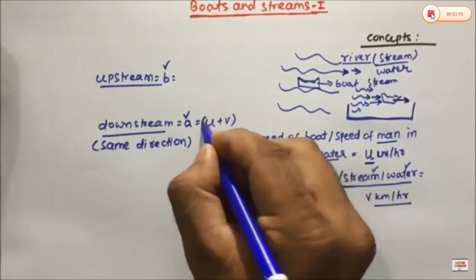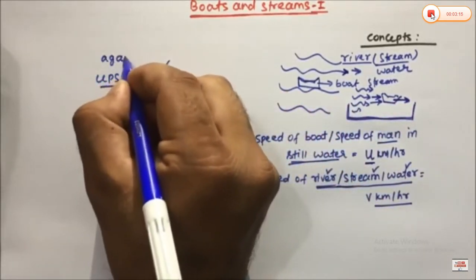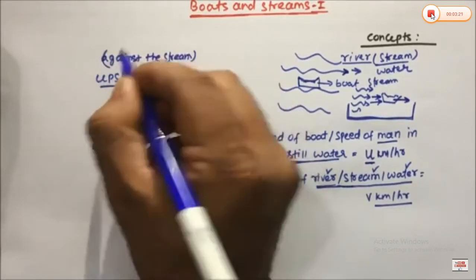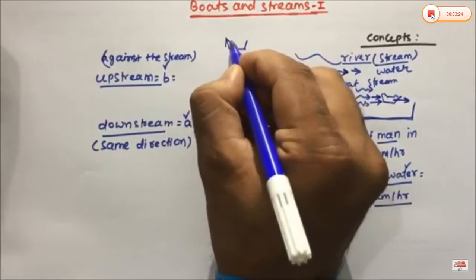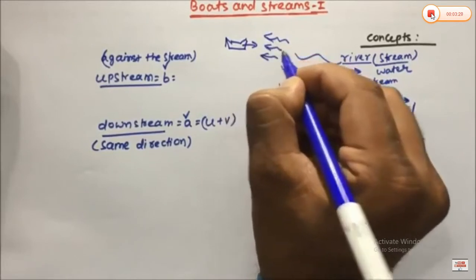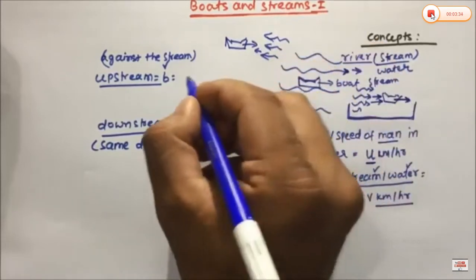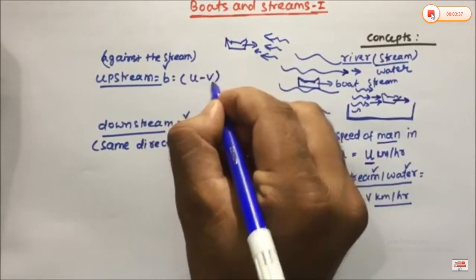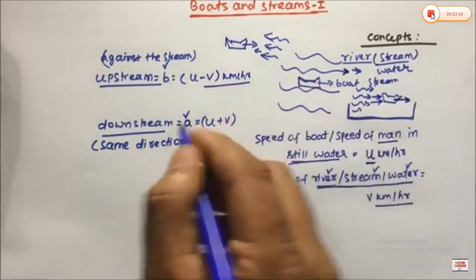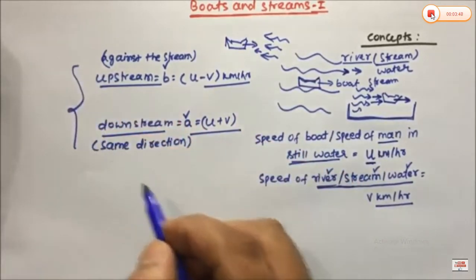So downstream speed equals U plus V kilometers per hour — when both move in the same direction, speeds get added. Upstream speed is when the boat moves against the stream. The stream puts force in the opposite direction, reducing the boat's speed. So upstream speed equals U minus V kilometers per hour. These are the two key speed formulas to keep in mind.